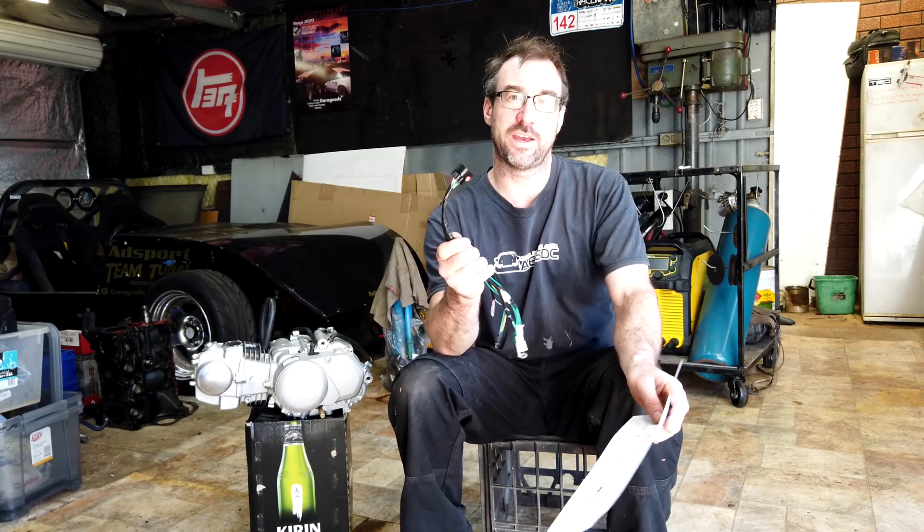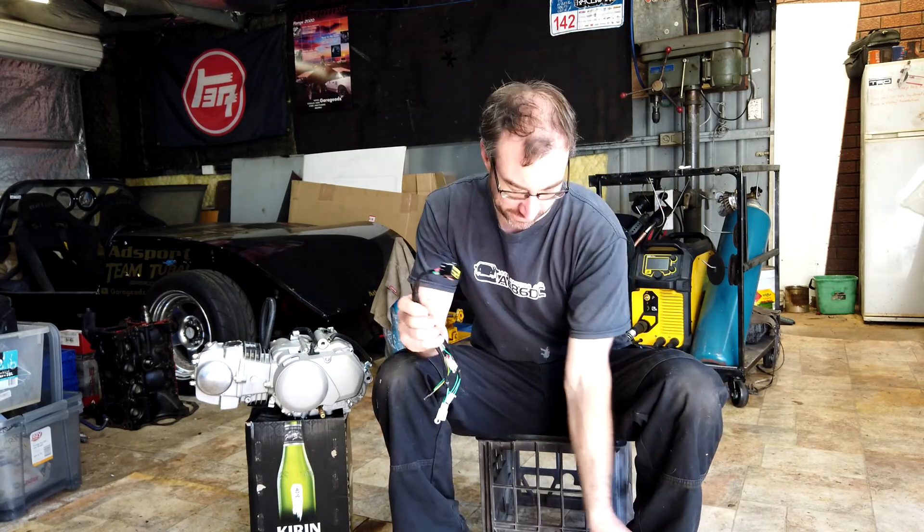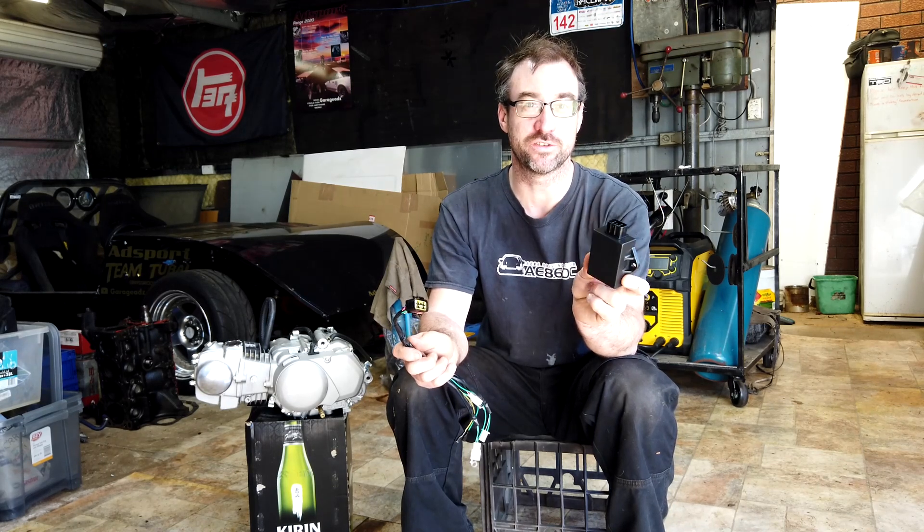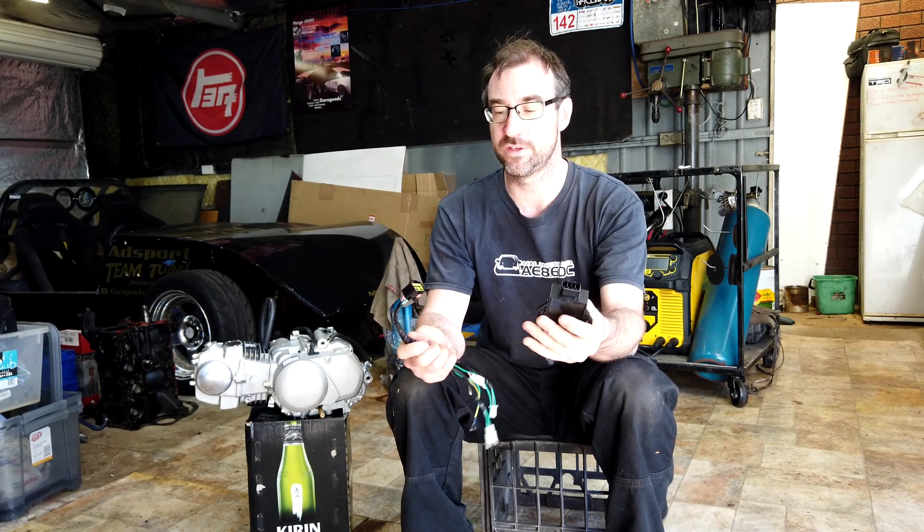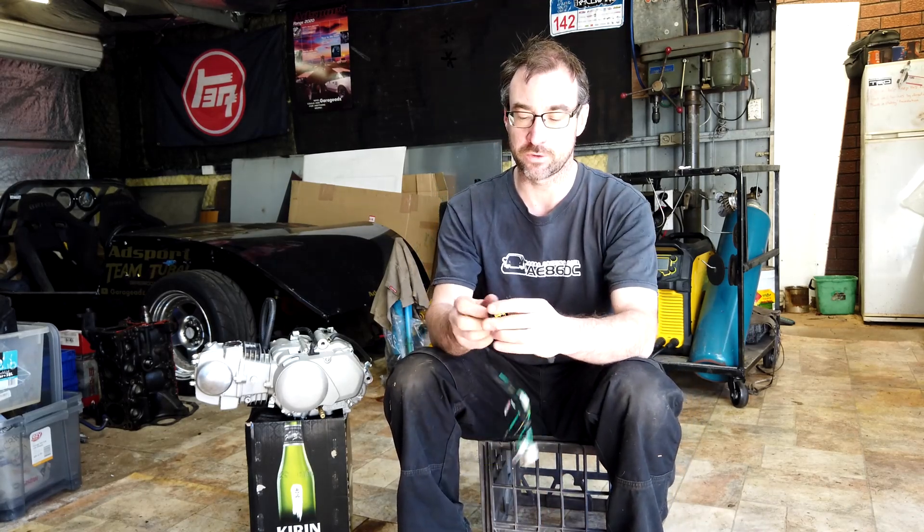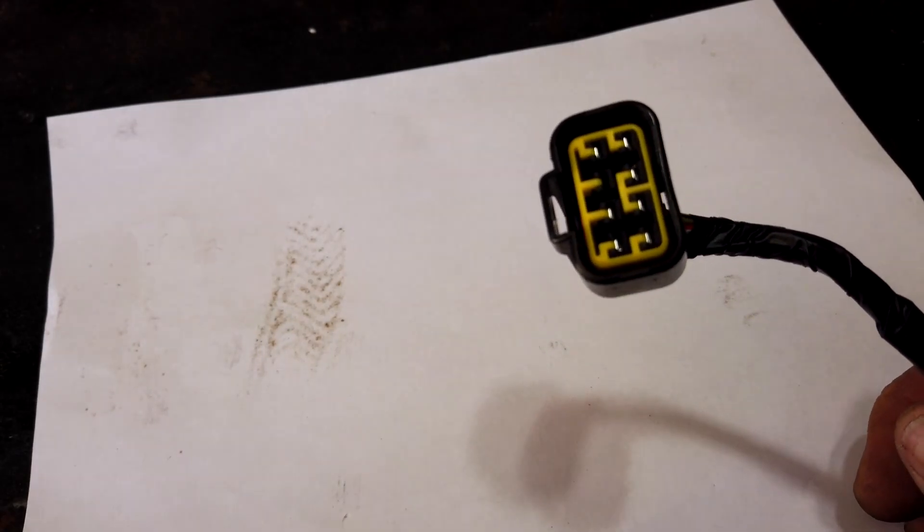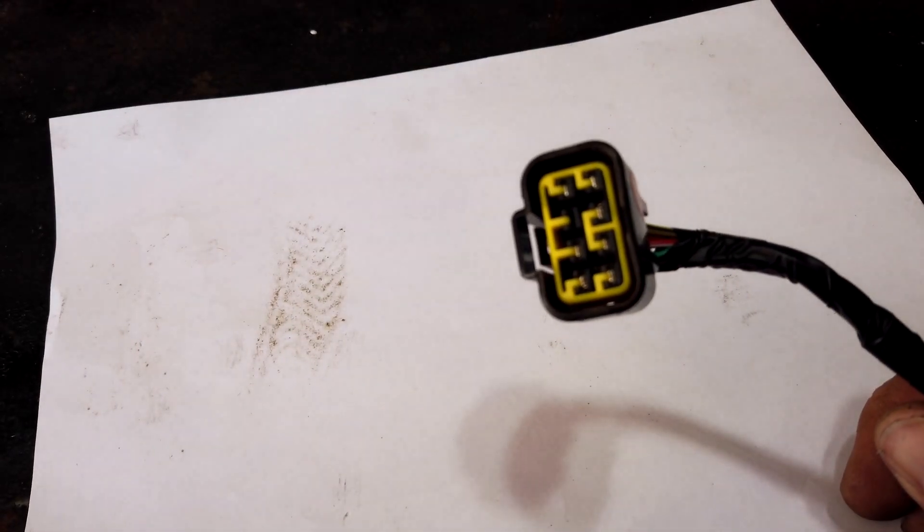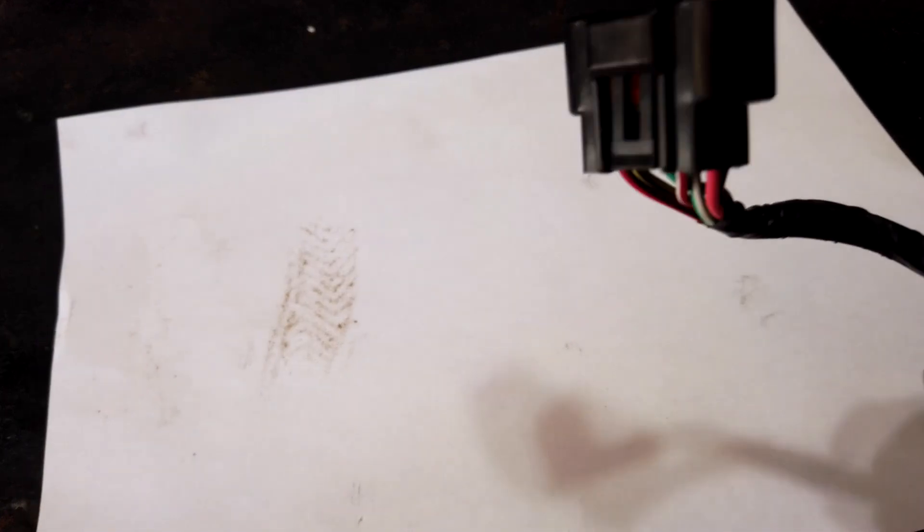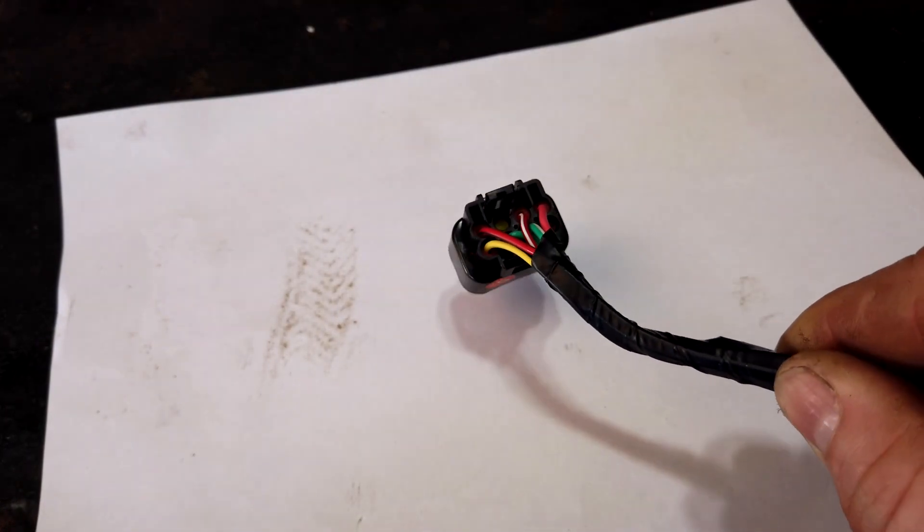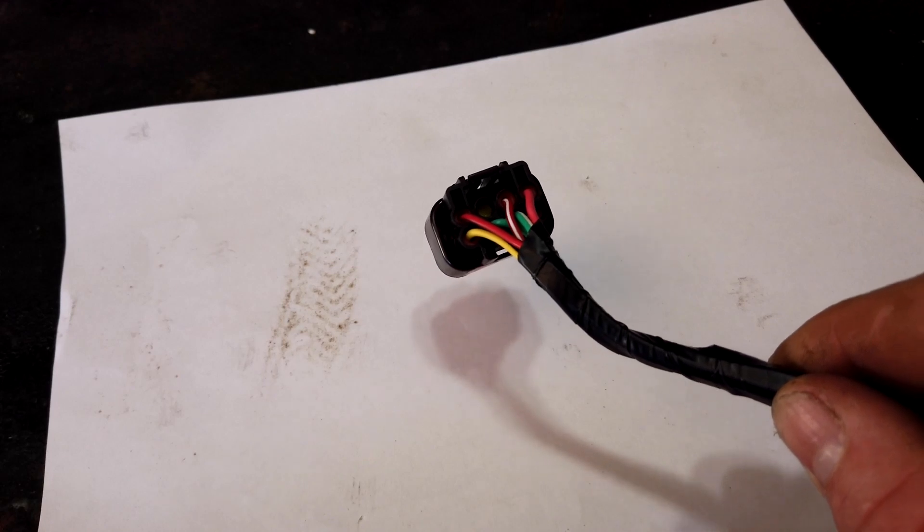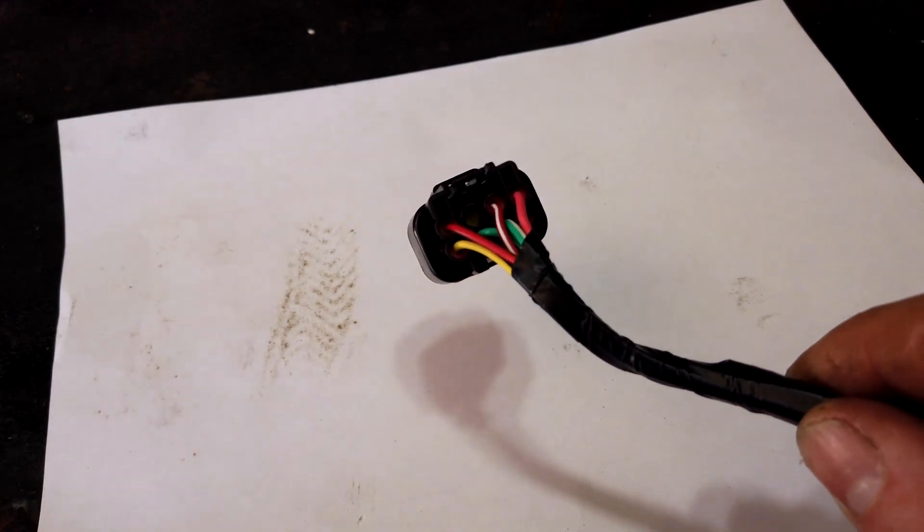We'll start off by identifying the pins on the 8-pin plug for the CDI, which is the capacitive discharge ignition system. This is a traditional 8-pin system, so let's have a look at the plug. There's nothing really special about the plug itself, it's a pretty standard 8-pin plug.